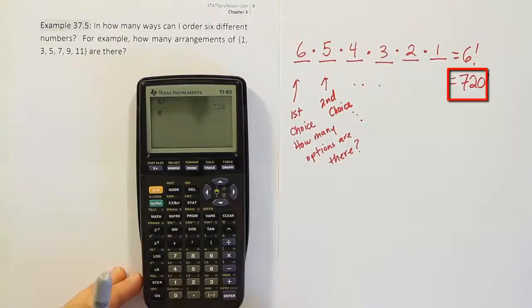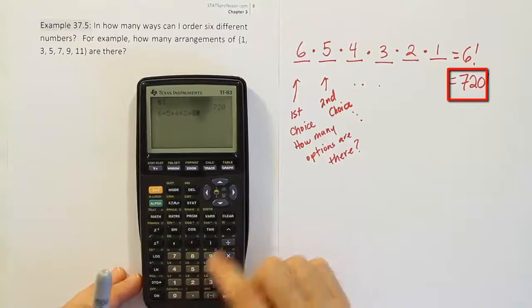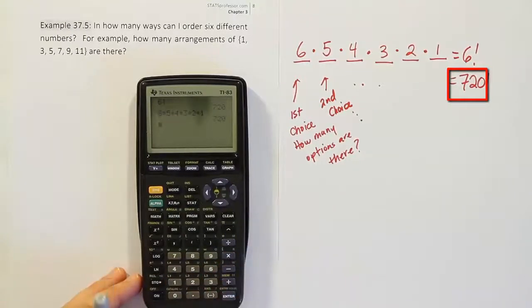And that's how it's done. Or, of course, you could just simply do six times five times four times three times two times one. But times one doesn't do anything. And we get 720. So that's it.